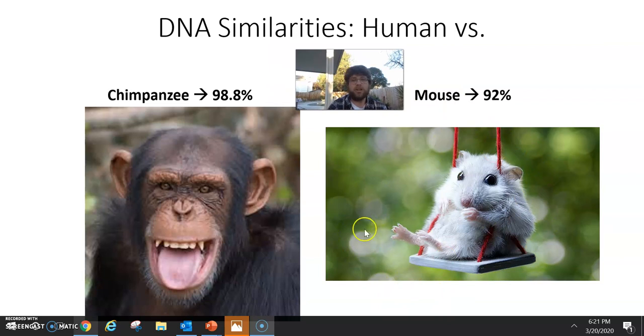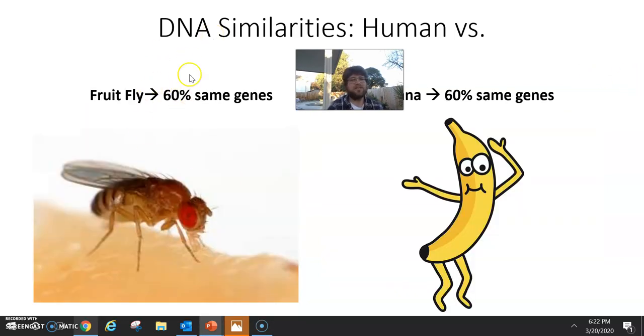Rodents were pretty close on that tree that we looked at on that website, 92%. Okay. And if you zoomed out even more and you looked at some organisms that don't have a backbone, that aren't even animals. Okay. We look at a fruit fly.